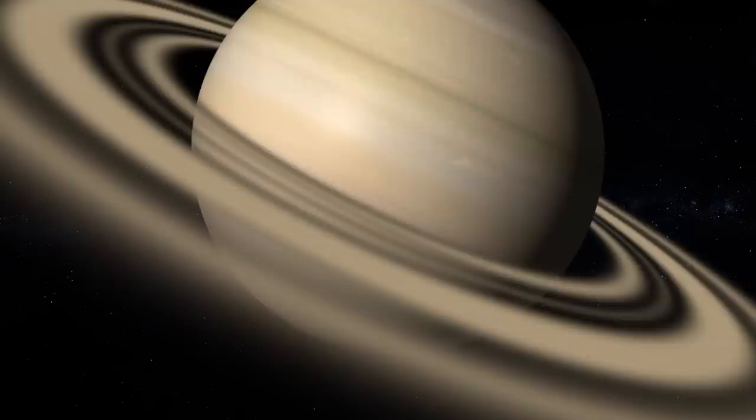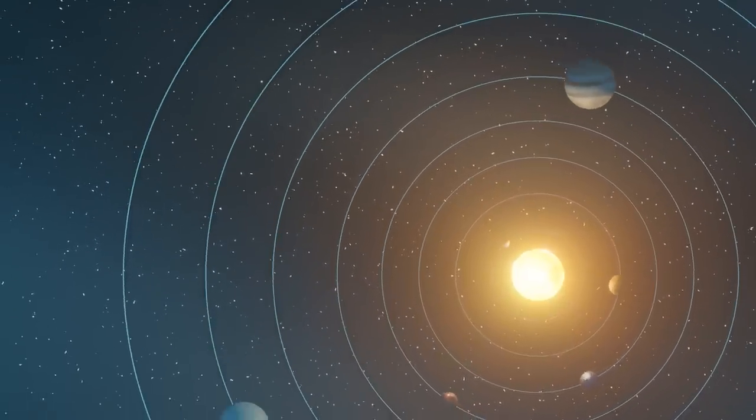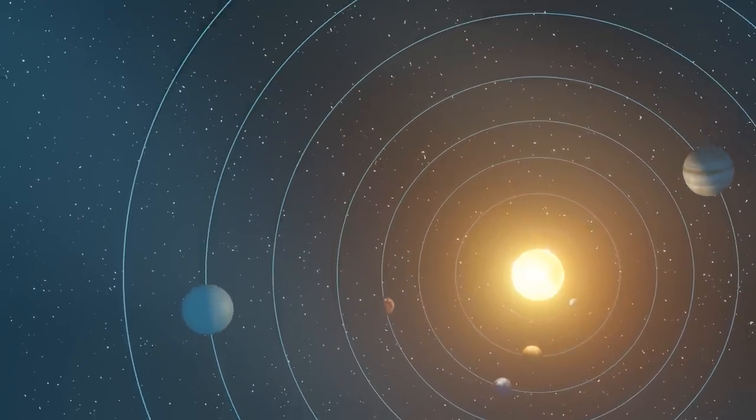Its rotation time, relatively fast, is estimated at 10 hours and explains its slightly flattened appearance at the poles, especially since it has a very low density, nearly eight times less than that of the Earth. It is also the only planet with a density lower than that of water.